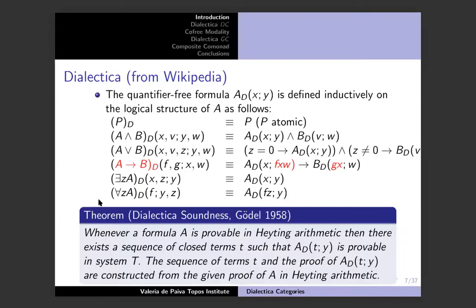For conjunction, the translation distributes over the sides — the reasonable constructive thing. For disjunction, you create an extra guard: if the guard is zero, you go to the left of the disjunction; if the guard is one, you go to the right.